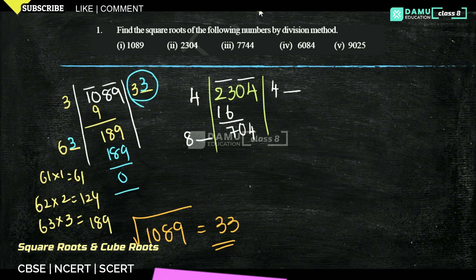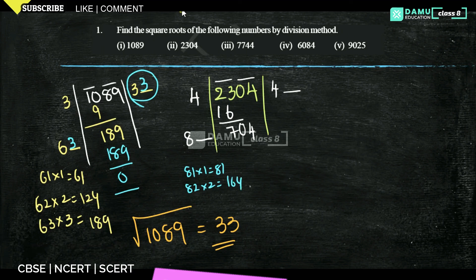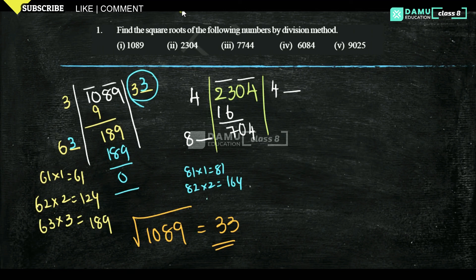Here we need to take the same place. So 81 into 1 is 81, then 82 into 2 is 164. Like that, if you go continuously, 704 where you will get, I think it is 88 into 8.